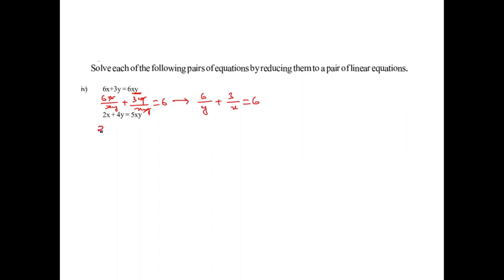For the next problem, shifting terms to the other side, the first equation becomes 6 by y plus 3 by x equals 6. Similarly, rearranging the second equation, it reduces to 2 by y plus 4 by x equals 5. These are the required equations.